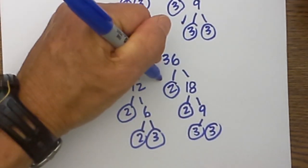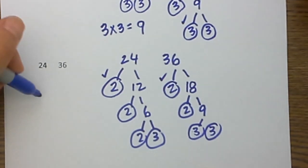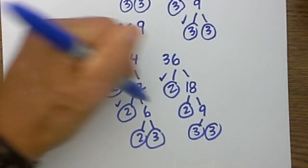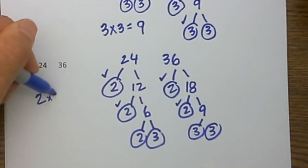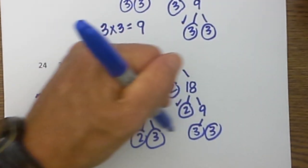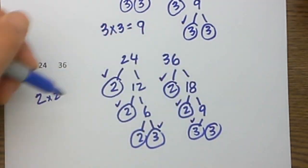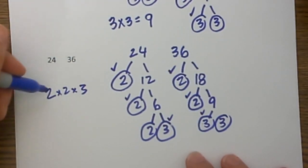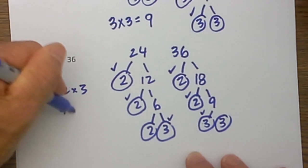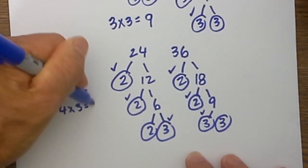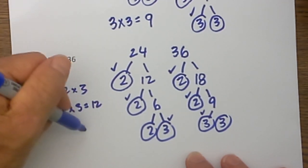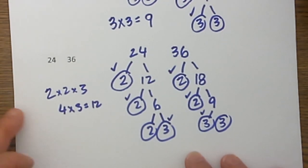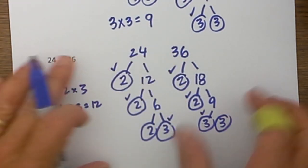I then will put a check mark by the common numbers, so I have 2, and I have 2 again, and then I have one more 3. So now to find the highest common factor, I will multiply 2 times 2, which is 4, and 4 times 3, which is equal to 12. So 12 is the HCF for 24 and 36.